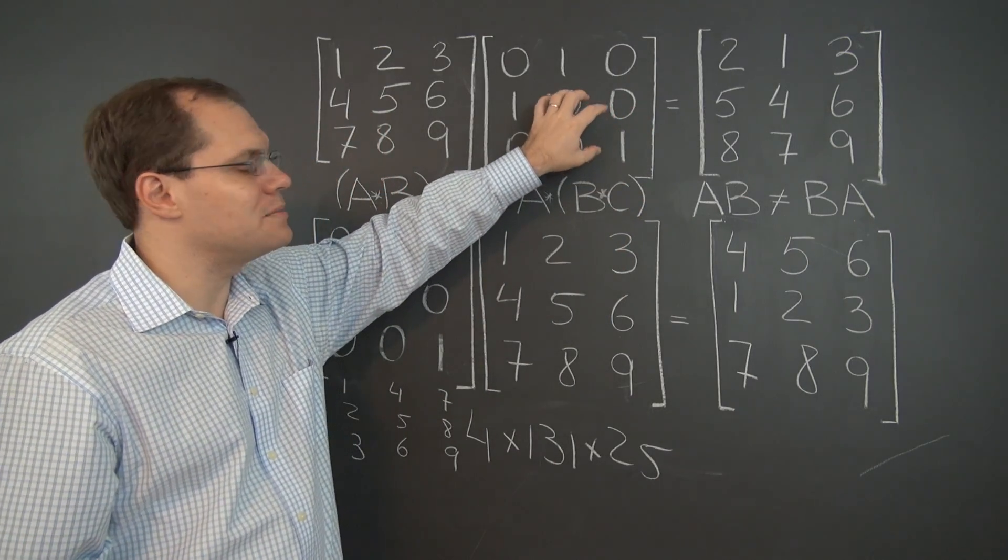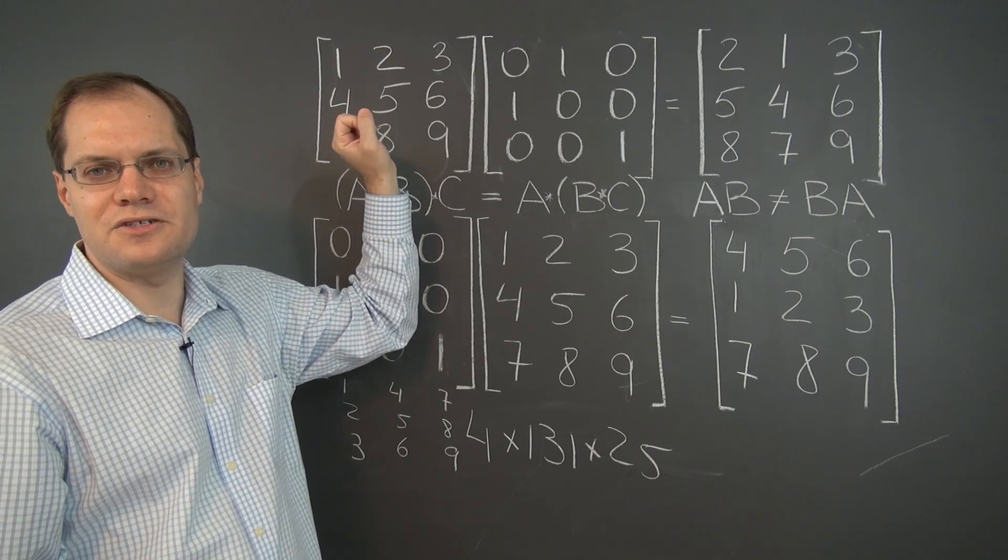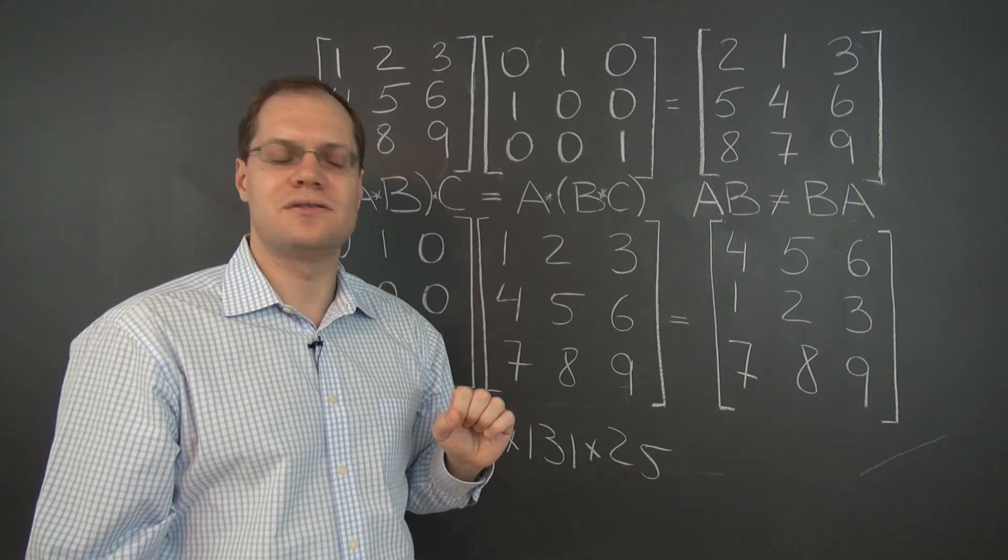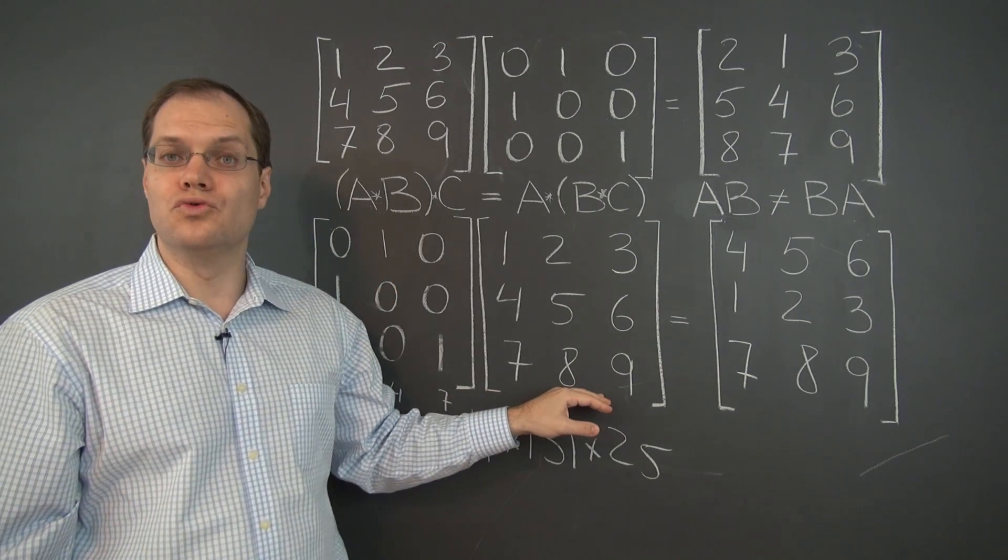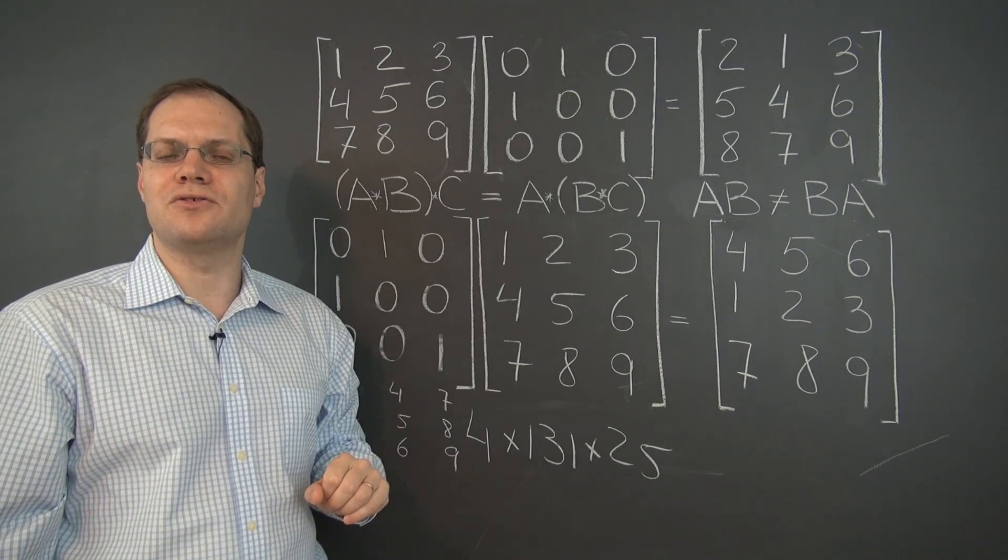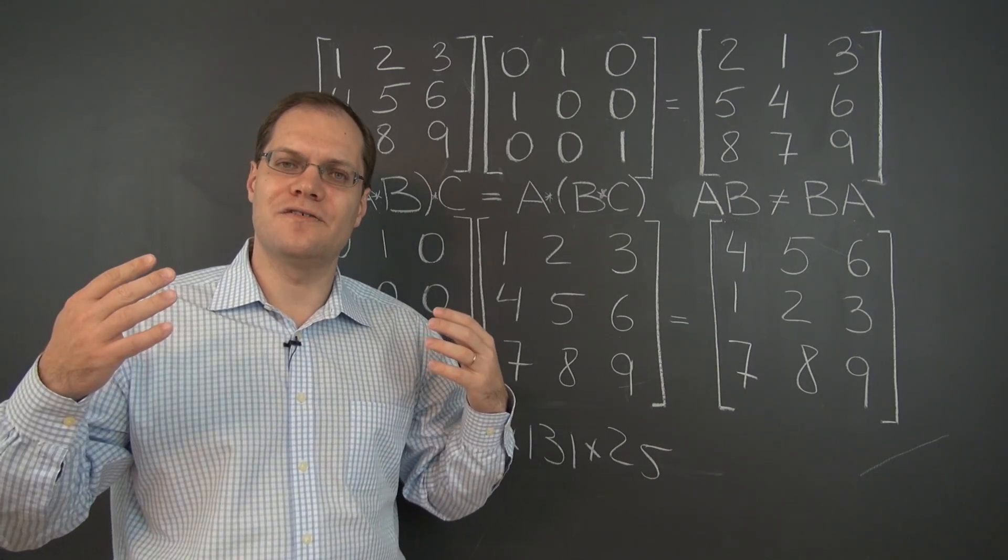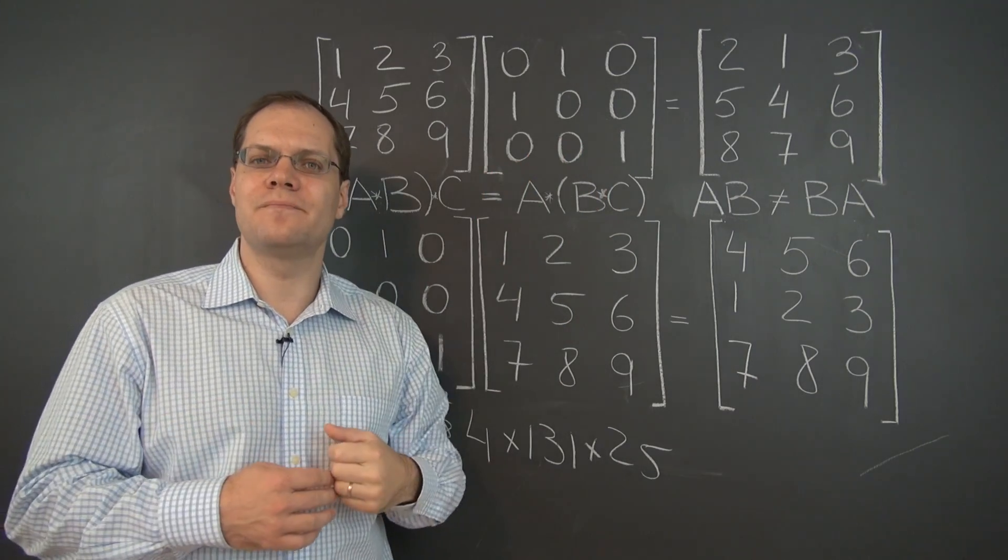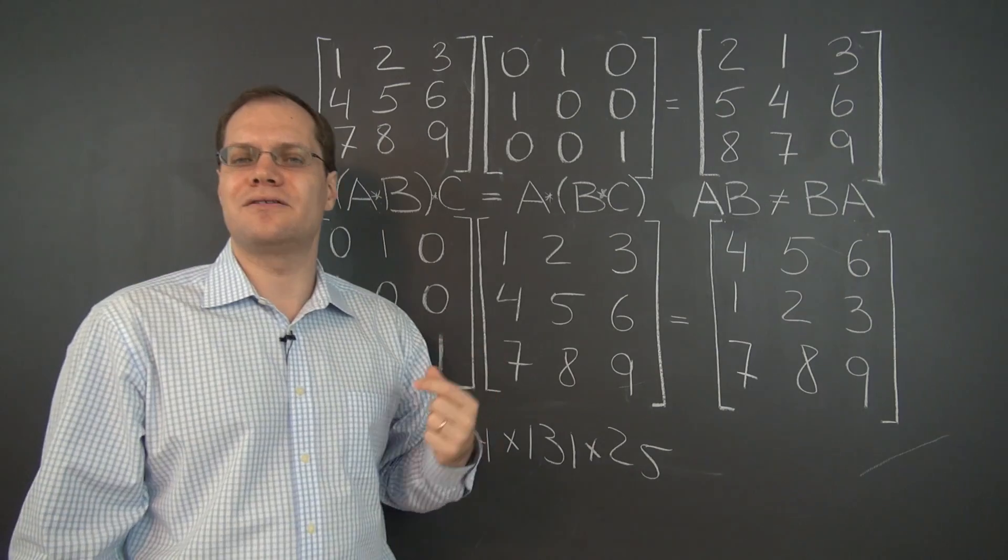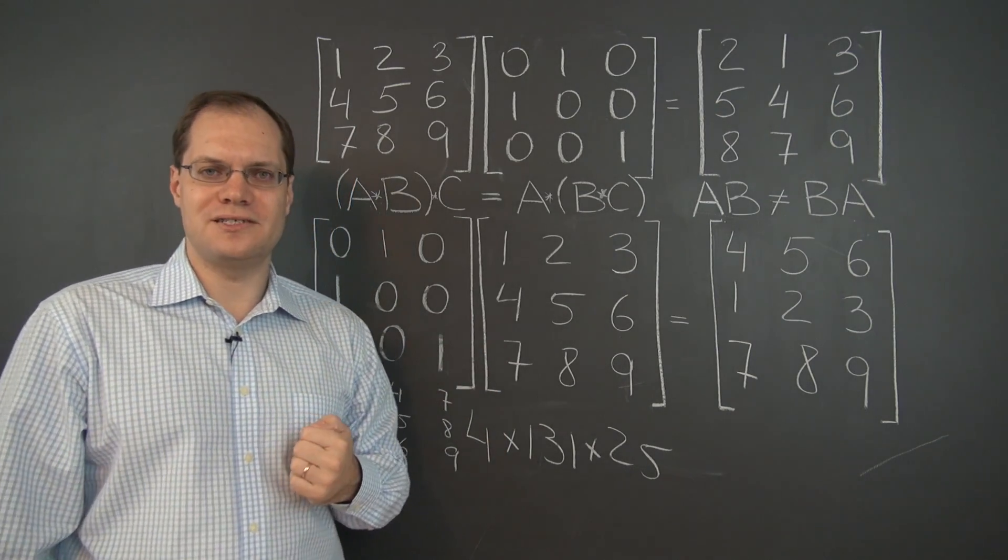So this matrix, when it appears on the right, switches the columns of the matrix on the left, the first two columns. But when it appears on the left, it switches the first two rows of the matrix on the right. That right there shows you lack of commutativity. Because when it comes from the right, it does one thing. When it comes from the left, it does another thing. So there's really no hope for commutativity.